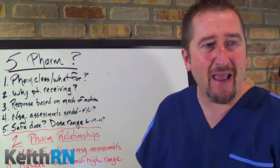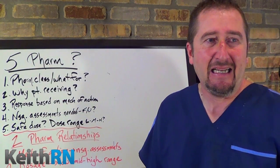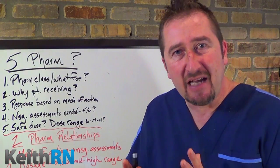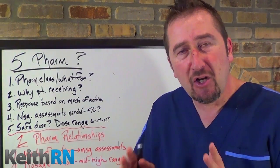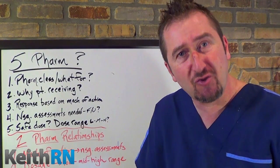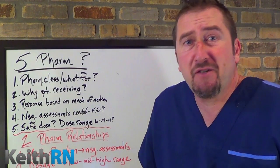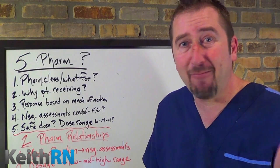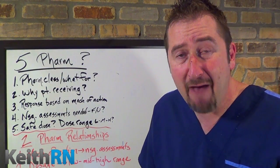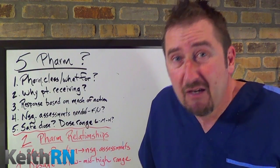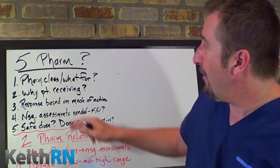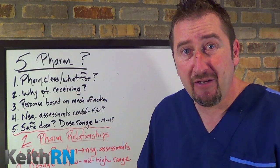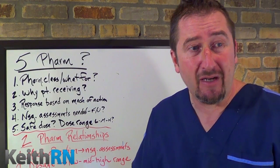Second question: why is your patient receiving it? Many medications have more than one indication, so you must be able to look at your patient's history and make a determination as to which of these multiple reasons applies. With atenolol, it could be for heart failure, high blood pressure, or after an MI to decrease complications. Which one is it? That's our second pharm question.